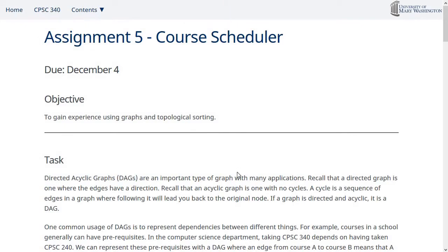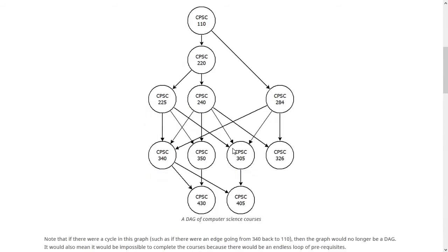DAGs — directed acyclic graphs — are an important type of graph, and we're going to use a DAG to represent the course and prereq information. Here's a DAG showing the required classes in the computer science major: 110 leads to 220 and 284, 220 can lead to 225 or 240, and 240 leads to several other classes. It being acyclic is important because if there was an edge from, say, 340 back to 110, that would create an endless loop where you could never actually take any of those classes.